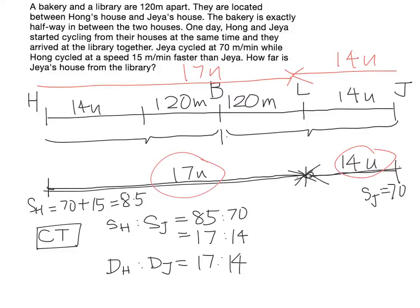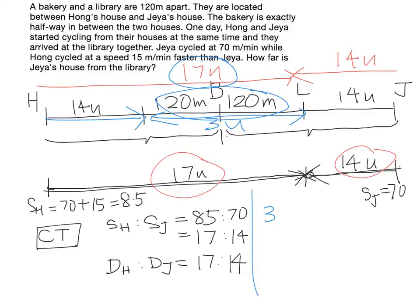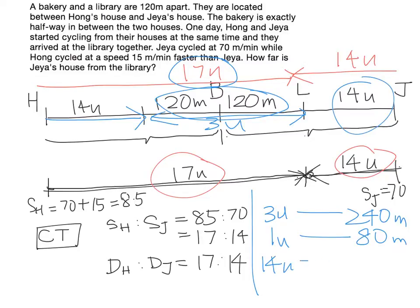If we take 17 units and subtract 14 units, this portion equals 3 units. So 3 units equals 120 times 2, which is 240 meters. Therefore, 1 unit equals 240 divided by 3, which equals 80 meters. They want to know how far JS's house is from the library. JS's house to the library is 14 units, so 14 units times 80 equals 1120 meters. That's the final answer.